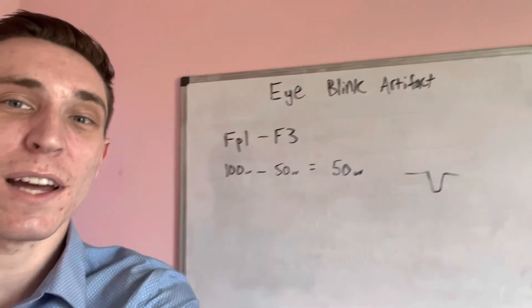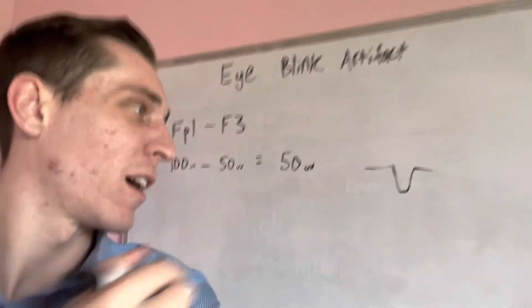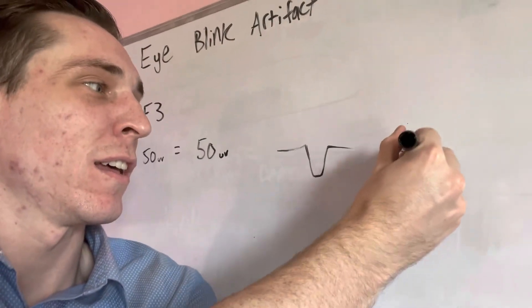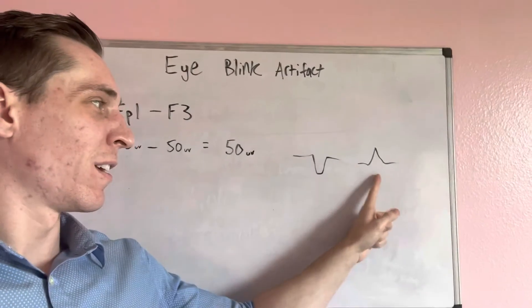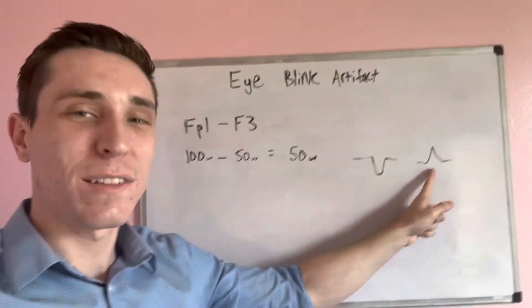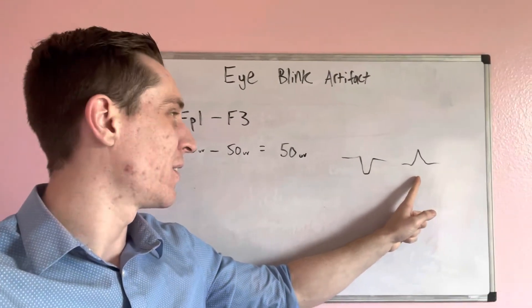But my eye blinks right now, or previously in our software, were looking like that. They were looking like that. So this is wrong. How could this even happen?